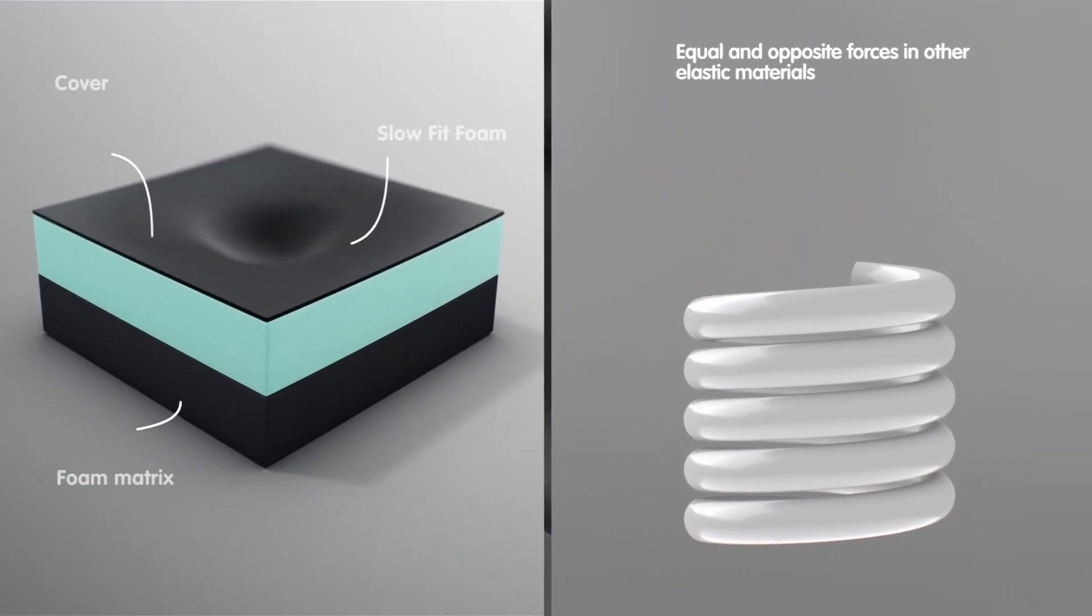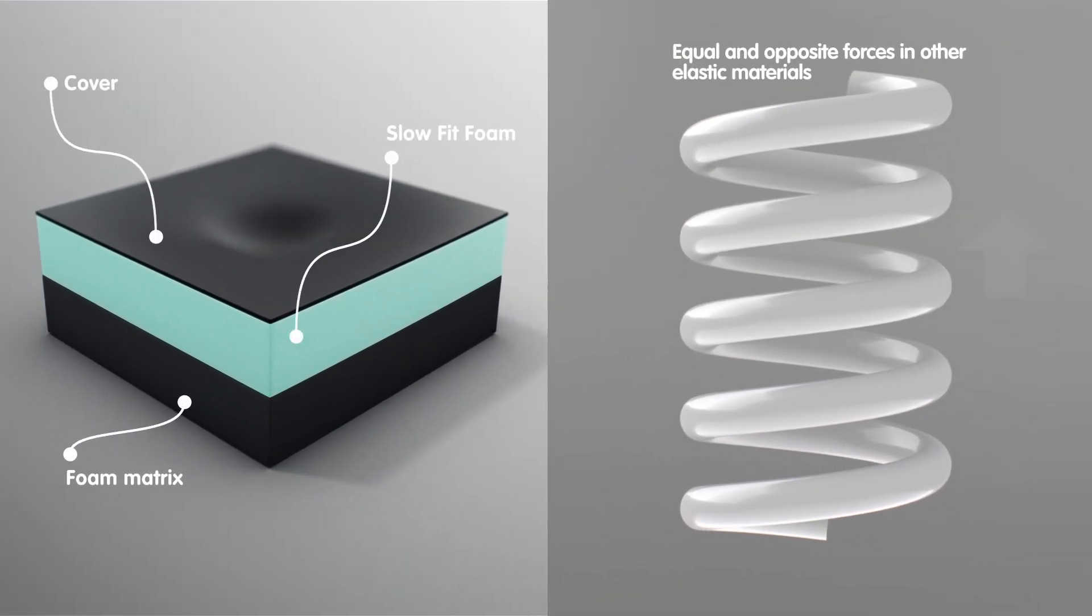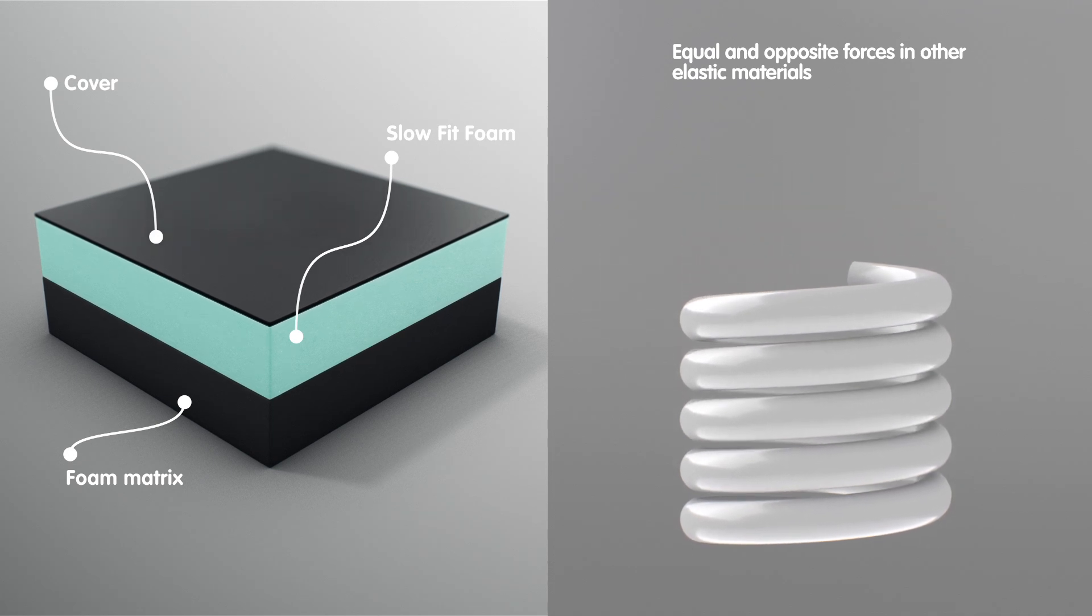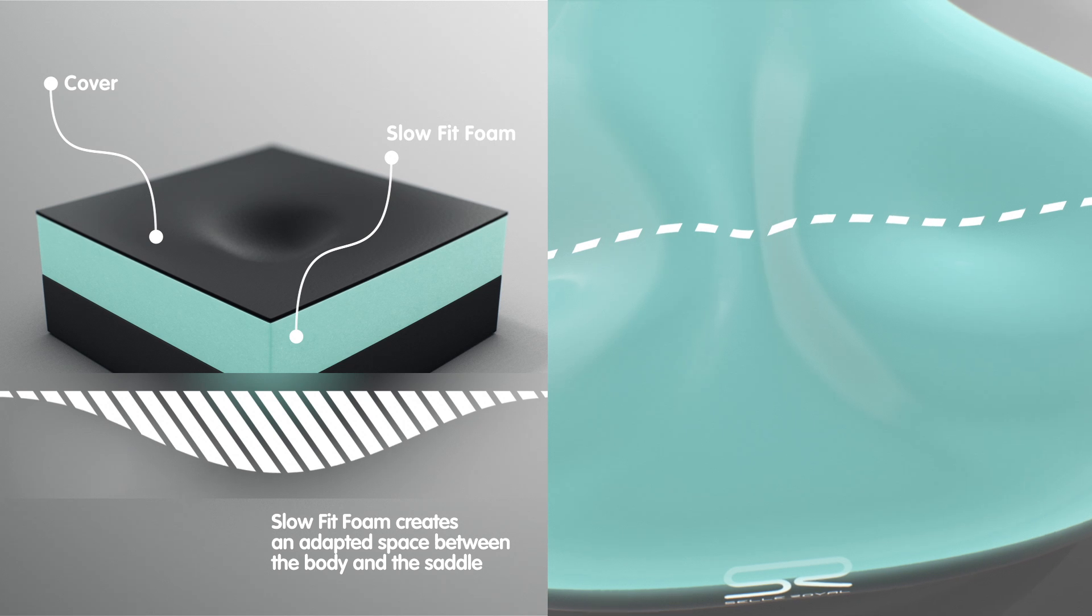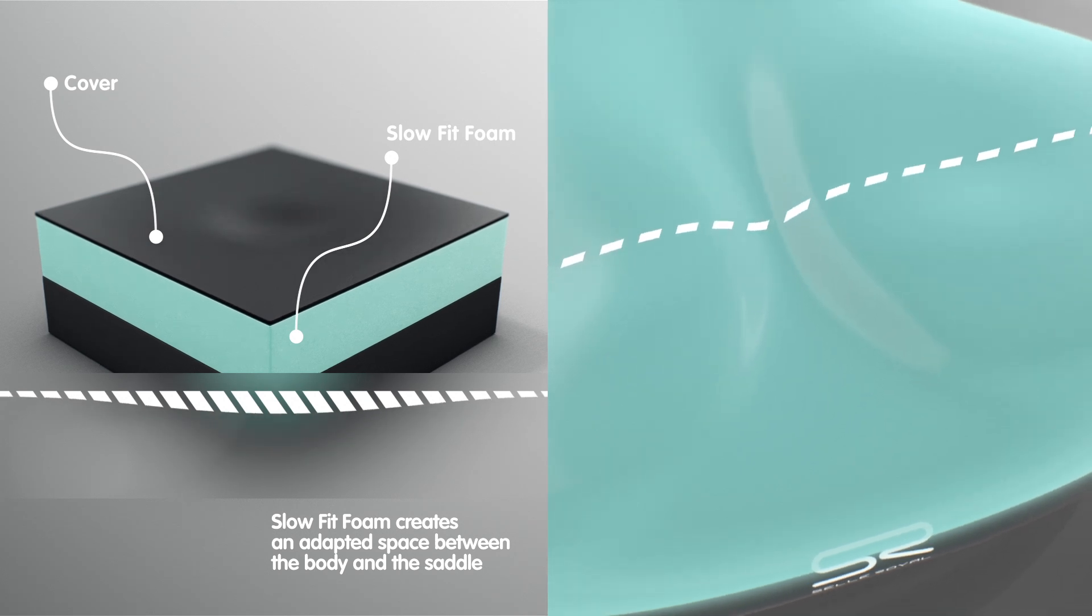When vertical pressure is applied to the contact surface, instead of it resulting in equal and opposite forces typical of other elastic materials, Slow Fit Foam reacts with a slow recovery movement, creating an adapted space in the middle between your body and the saddle.